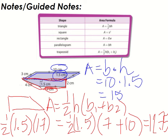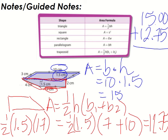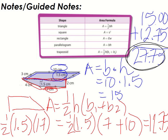Now that we have the area of the two pieces, we add them together. So we'll do 15 plus 12.75, and our total area of this composite figure is twenty-seven and seventy-five hundredths centimeters squared. That's a composite figure — breaking one shape into simpler shapes and then adding them back together.